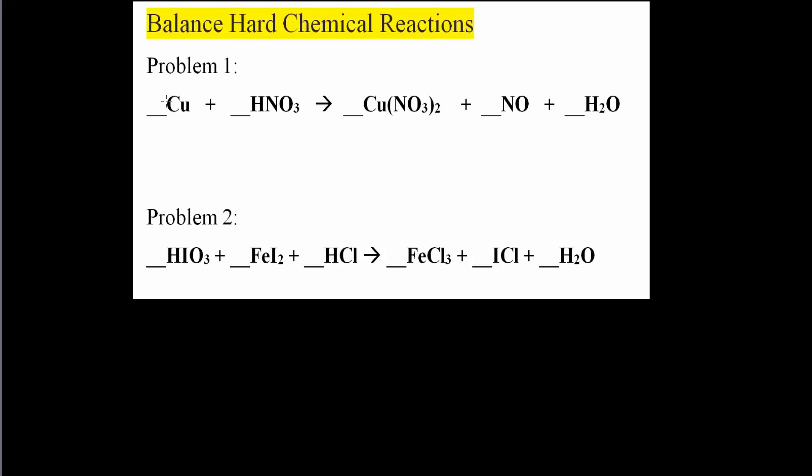First, I'm going to call this term right here A. Ultimately, it will be a number like what we've done before. I'll call this term B, this term C, this term D, and this term E. Now I'll look at the particular elements that we have. So we have Cu, we have H, we have N, and we have O. We have these four elements that we want to balance.